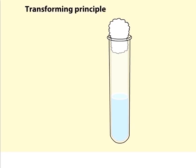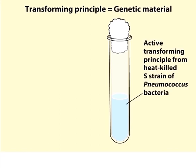In 1944, Avery, McLeod, and McCarty performed experiments to determine the chemical nature of the transforming principle, which in today's terms is genetic material.